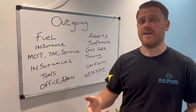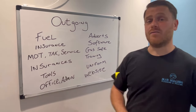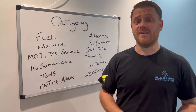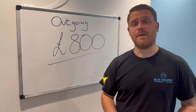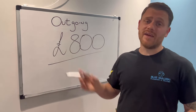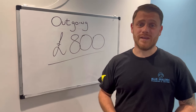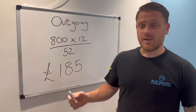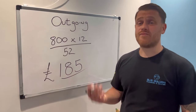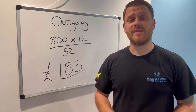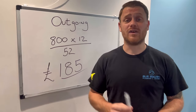Divide your yearly cost by 12 to get your monthly cost. Once you've added up all the monthly costs and come up with a number — in our example that's £800 per month to run the business — convert it to weekly by multiplying by 12 and dividing by 52. That comes to £185 per week.